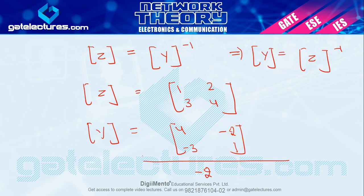An important point is the Z–Y relationship. When we study H parameter or T parameter later, we will also learn how to relate parameters that are not simply inverses of each other. In the next video we will cover transmission parameters and hybrid parameters, and after that we will learn to convert between any two parameter sets. If you have any doubts, please post them in the comment section. Thank you.